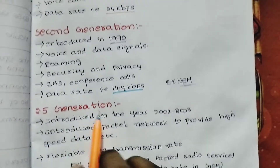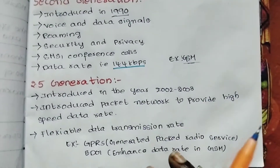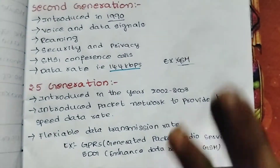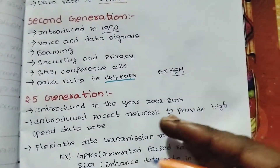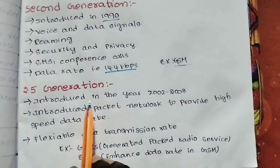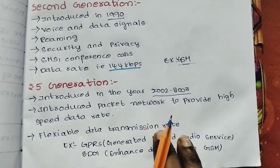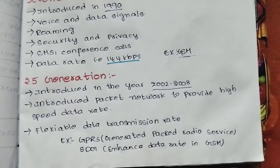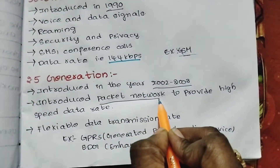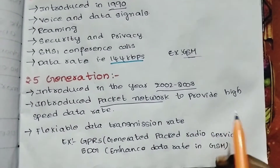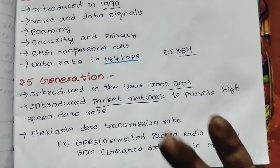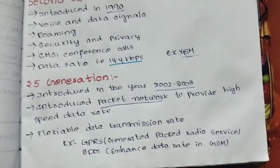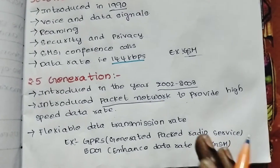The next generation is 2.5G. This is not an official generation — 2.5G means some development to get beyond the second generation, like an update. It was introduced in 2002–2003 and introduced the packet network to provide higher speed data rates.